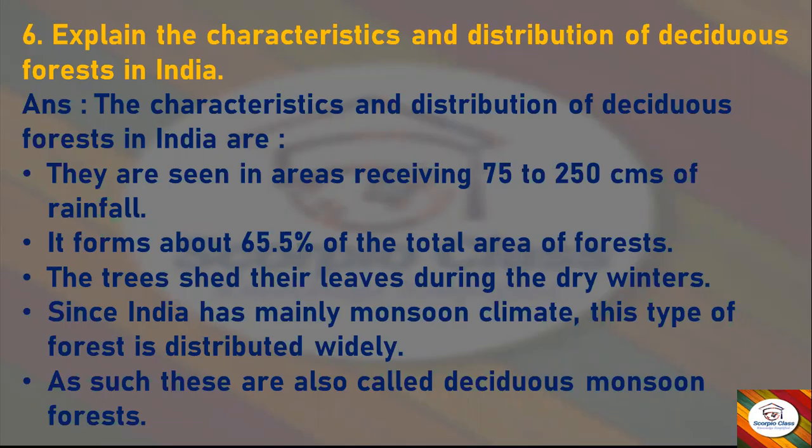Deciduous forests form about 65.5% of the total area of forests. The trees shed their leaves during the dry winters. Since India has mainly a monsoon climate, this type of forest is distributed widely. As such, these are also called deciduous monsoon forests.